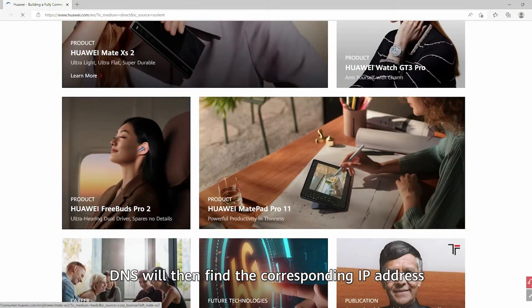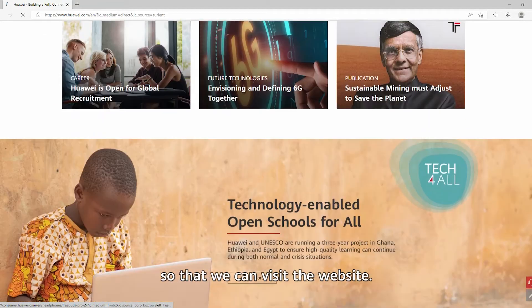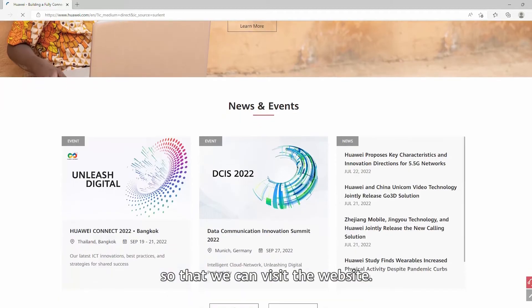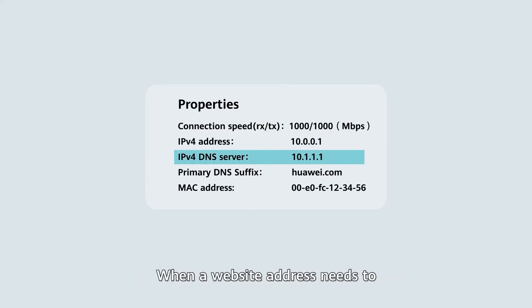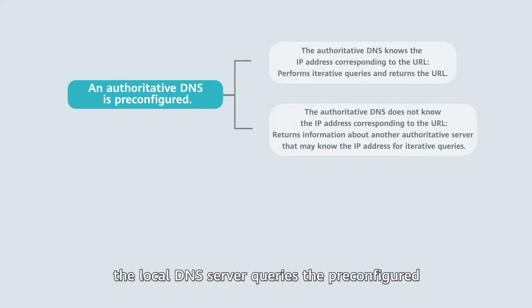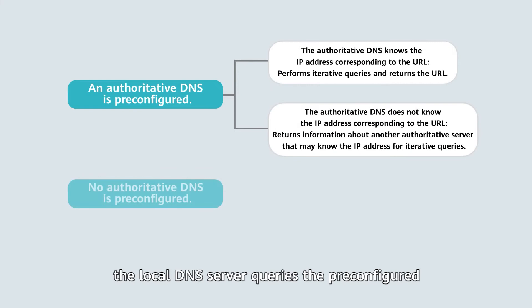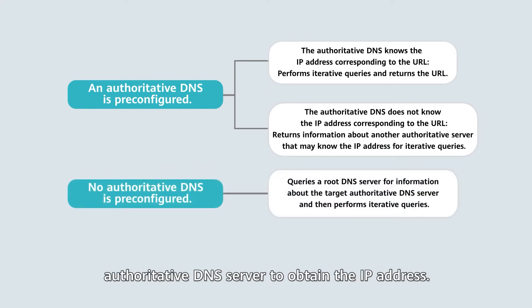DNS will then find the corresponding IP address so that we can visit the website. Each computer is configured with a local DNS server. When a website address needs to be translated into an IP address, the local DNS server queries the pre-configured authoritative DNS server to obtain the IP address.